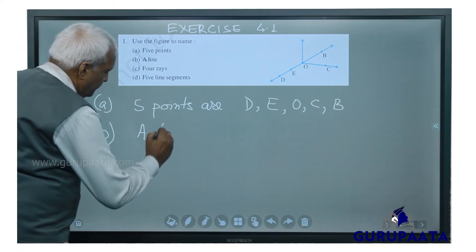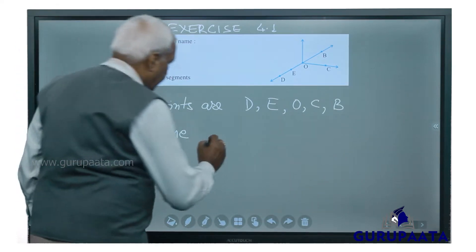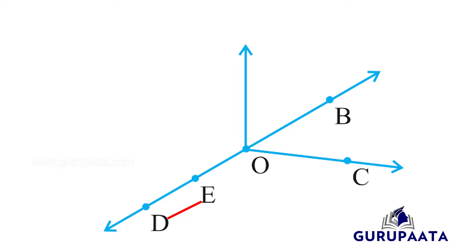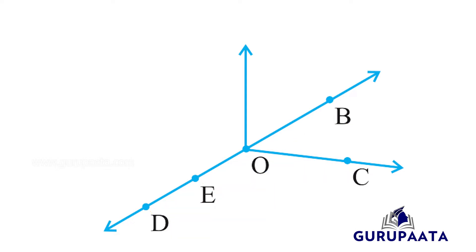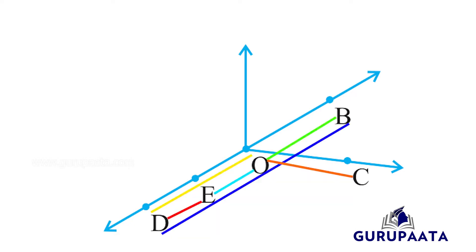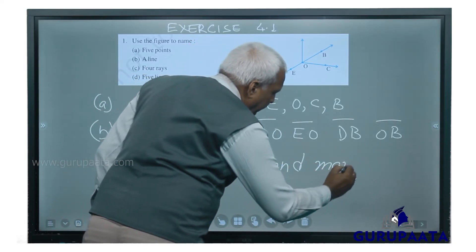Next, we should name one line. There can be many lines: DE is one line, DO is another line, EO is another line, DB is another line, OB is another line, OC is another line. These are the lines that can be found from this figure, and many more.